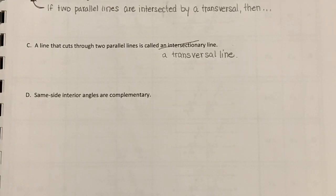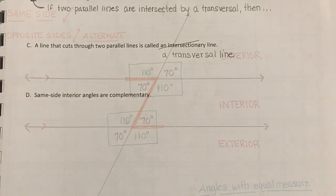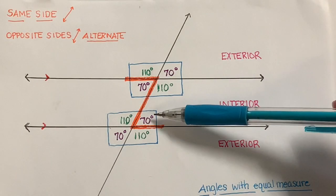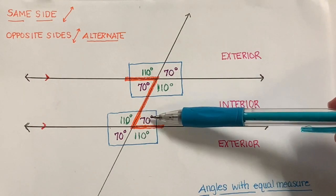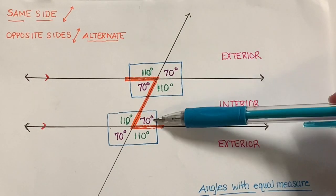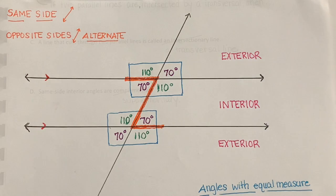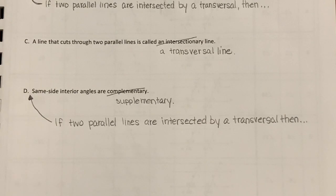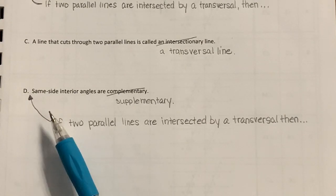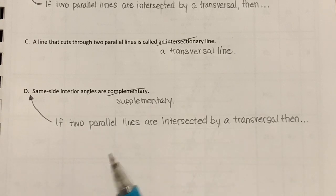Last one, same side interior angles are complementary. Let's see. These two would be same side, same side of the transversal, interior lines. They're not complementary. If we change it to supplementary, we have an almost true statement here. We need one more thing. We need to add this statement to the front of this statement again. If two parallel lines are intersected by a transversal, then same side interior angles are supplementary.